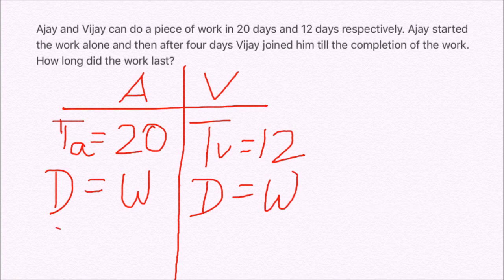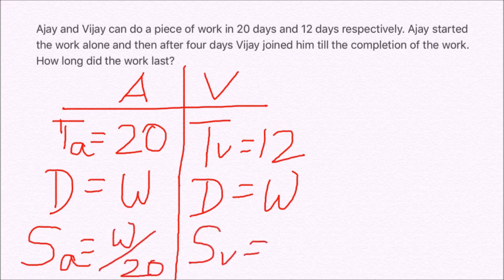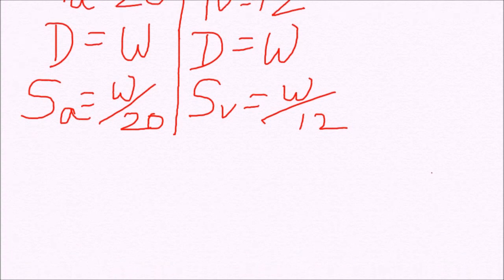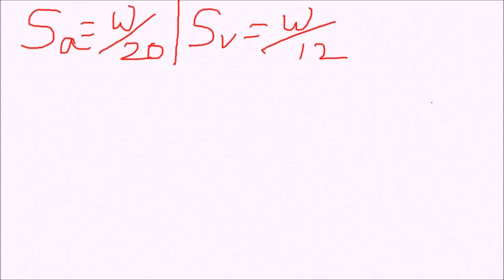We can easily see from here that speed of Ajay is W by 20. While speed of Vijay is W by 12. This was our first case.